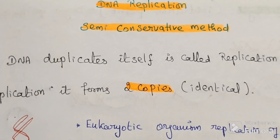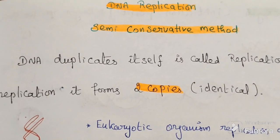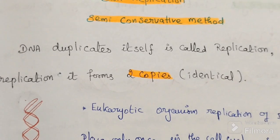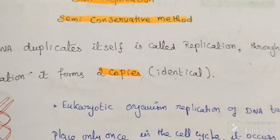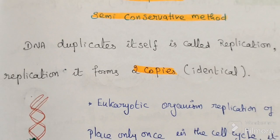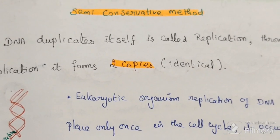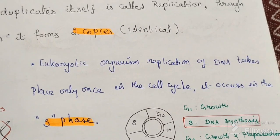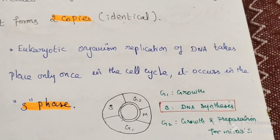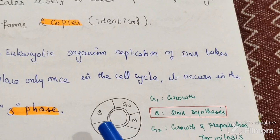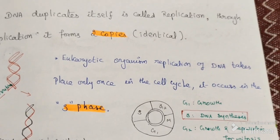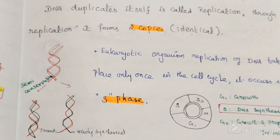This video will discuss DNA replication, or the semi-conservative method of DNA replication. The process by which DNA duplicates itself is called replication. Through replication, it forms two identical copies. In eukaryotic organisms, replication of DNA takes place in the S phase of interphase in the cell cycle. DNA replication occurs through the semi-conservative mode of replication.